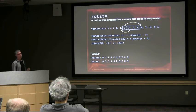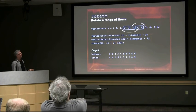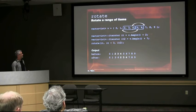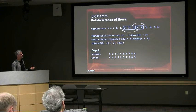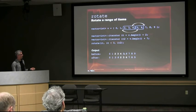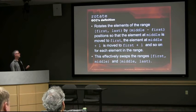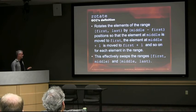You can rotate a range of items too. Say we want to take three elements and move them while two other items slide — it's the same operation. We get our position iterators and call rotate: the output of 2 3 4 5 6 becomes 5 6 2 3 4. GCC's definition: rotates elements of range [first, last) by middle-minus-first positions — element at middle moves to first, element at middle+1 moves to first+1, and so on — effectively swapping the ranges [first, middle) and [middle, last).